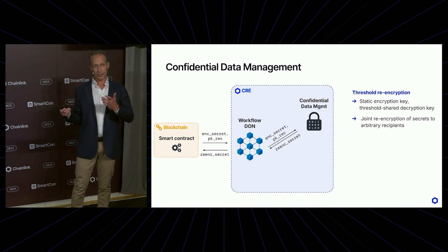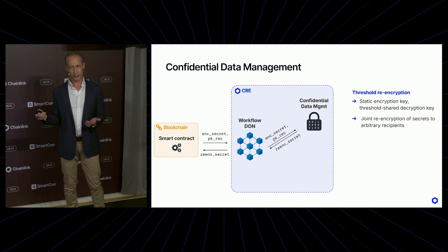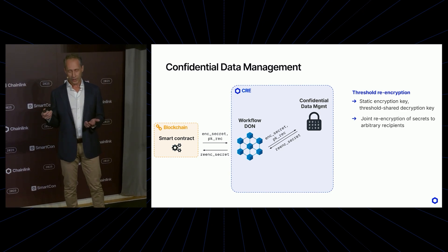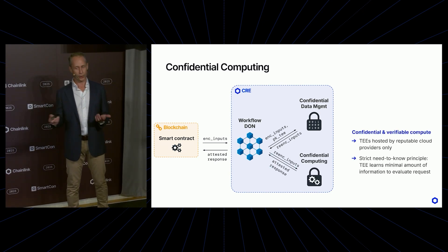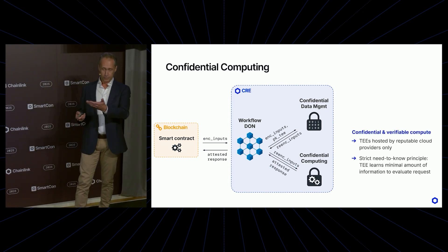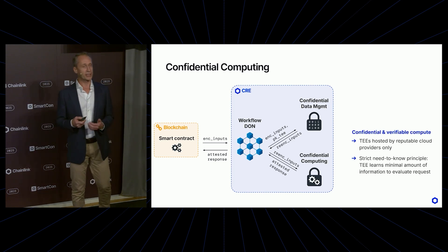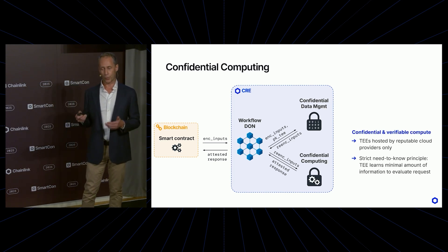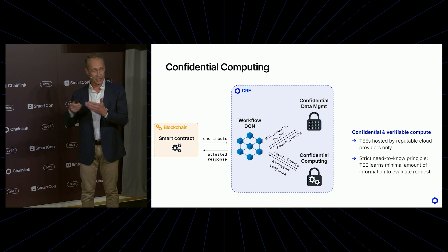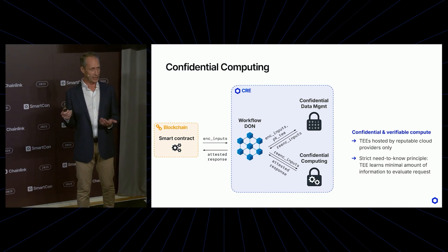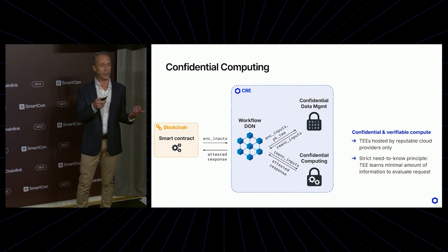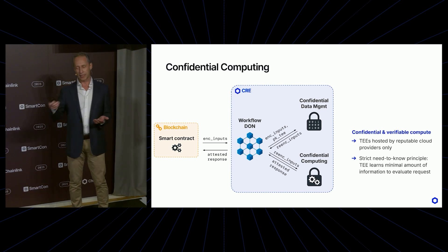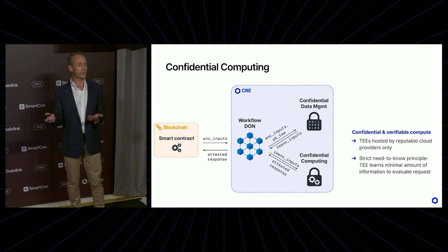That is just selectively revealing secrets. What if we want to add computation on those secrets? The Confidential Data Management can help here, because instead of revealing the secrets — the private inputs to a computation — to a person or an entity, we actually encrypt them under the public key of an enclave in a pool of TEEs that are forming the confidential computing capability.